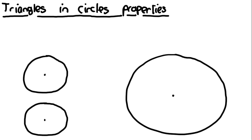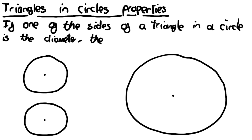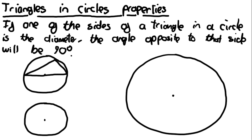The key property you need to know for triangles in circles is that if one of the sides of a triangle in a circle is the diameter, the angle opposite to that side will be 90 degrees. This is always the case. So if the side of the triangle is the diameter — such that it passes through the centre — then the opposite angle will be a right angle.